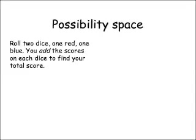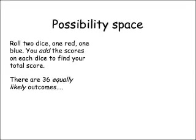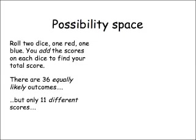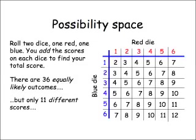That leads on to the idea of possibility space diagrams. Suppose you had two dice — one red, one blue — and you add the scores to find your total. There are 36 equally likely outcomes: for each of the 6 red scores, there are 6 possible blue scores. But there are only 11 different possible totals, from 2 (1+1) to 12 (6+6). The situation is best displayed in a table, with the red die along the top and the blue die down the side. Straight away you can see there are 6 ways of getting a 7, so the probability of scoring 7 is 6 over 36, which cancels to a sixth.